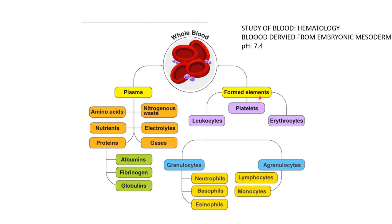The formed elements are of three parts: first, erythrocytes, also known as RBCs; second, platelets; and third, leukocytes, also known as WBCs. WBCs are of two types: granulocytes and agranulocytes. Granulocytes are of three types — neutrophils, basophils, and eosinophils. Agranulocytes are of two types — lymphocytes and monocytes.